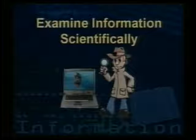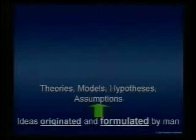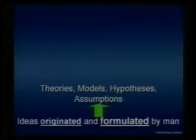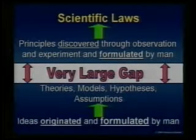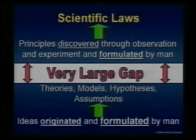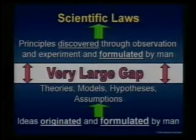So now let's examine this definition scientifically. When we look at science, we have things called theories, models, hypotheses, and assumptions — we originate and formulate those. But above that level of science there's a very large gap, because what's above all those theories, assumptions, and models is scientific laws. We discover scientific laws; we do not create them. We can create hypotheses, models, and theories, but we do not create scientific laws. We discover them and formulate ideas. So where did they come from?